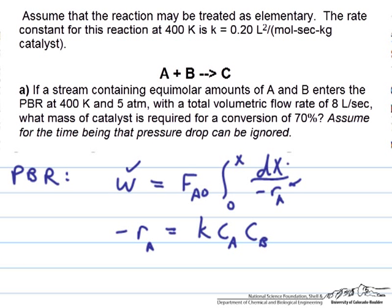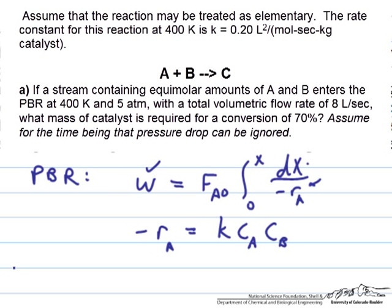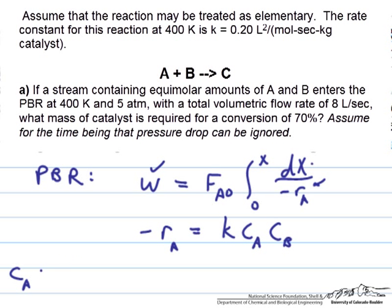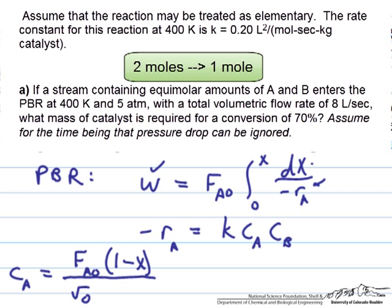There's one-to-one stoichiometry here, so the first part of this is simple. The concentration of A, for example, is equal to the molar flow rate of A at the inlet times 1 minus x for conversion divided by the volumetric flow rate V. But the volumetric flow rate is also a function of the conversion because the number of moles going through the reactor actually decreases with conversion. We have two moles of reactants on one side and one mole of product on the other.